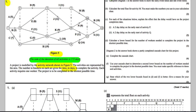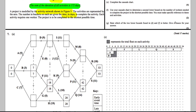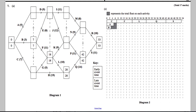For part A, complete Diagram 1 in the answer book to show the early event and late event times. The early event times are along the top and we do a forward pass. The late event times are at the bottom and we do a backwards pass. When going forwards, we're looking for the biggest number we can get to on top.